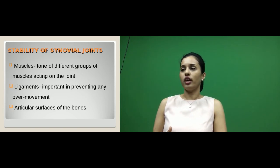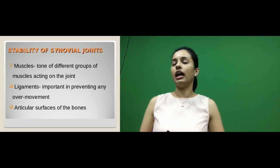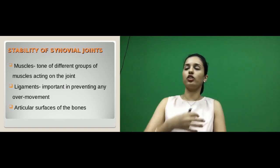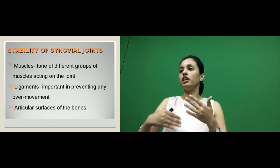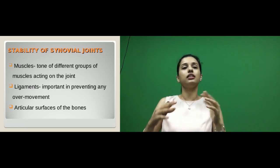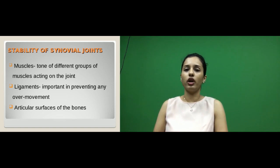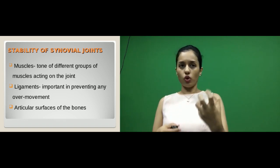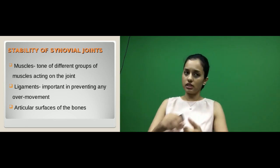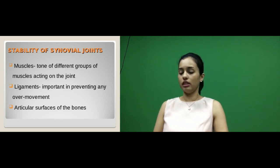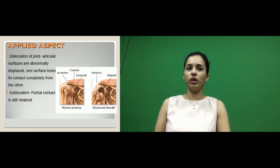The stability of the synovial joint depends on the muscles: their tone and the tone of different muscle groups acting on the joint maintains stability. Around the capsule there are different ligaments — true ligaments are thickenings or reinforcements of the capsule, and there are other accessory ligaments around the joint. These provide good stability for the synovial joint, preventing over-movement. Tone also helps in reducing over-movement, along with the ligaments and the articular surfaces lined by articular cartilage.